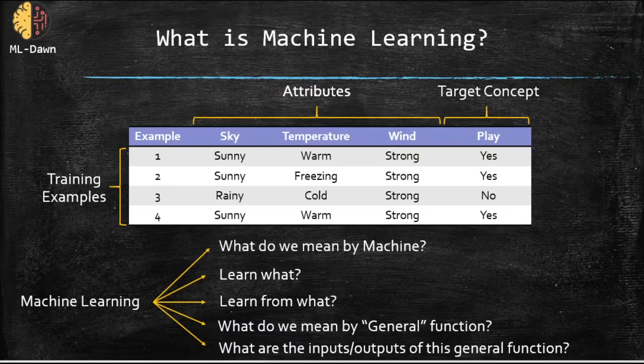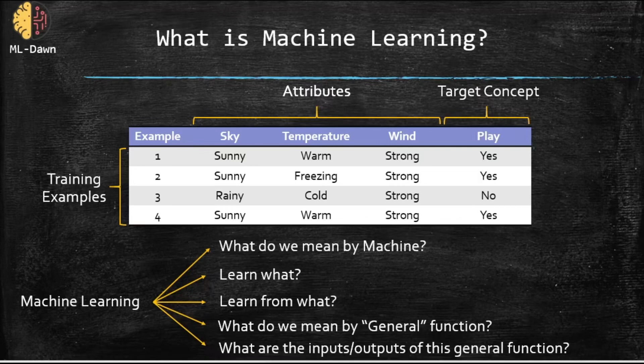So imagine that Joe has a habit of playing golf depending on what type of a day he is having. Now what do I mean by what type of a day? Meaning that is the sky sunny or not? Is it hot, warm or freezing? Is it windy or not? So depending on these attributes, Joe would decide whether he's gonna play or not. For example, play golf.